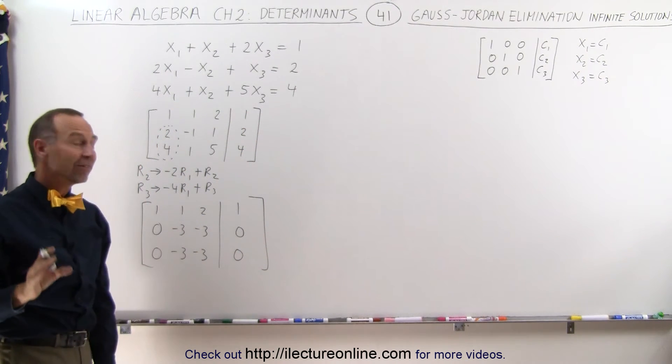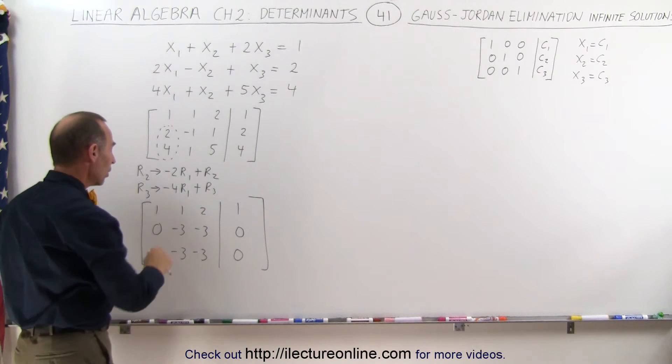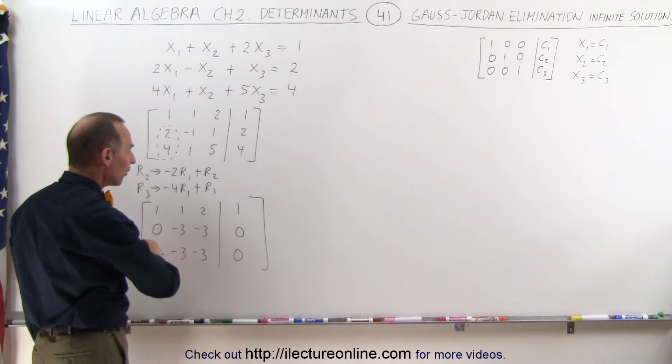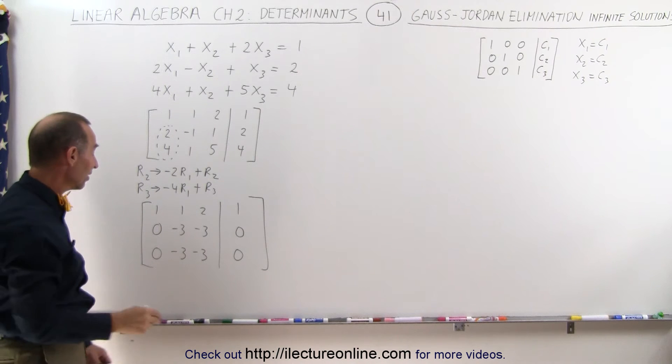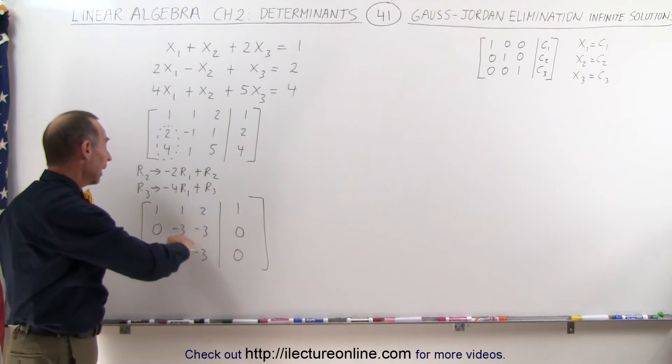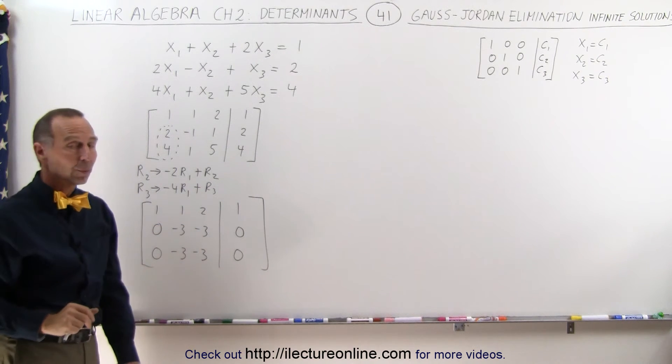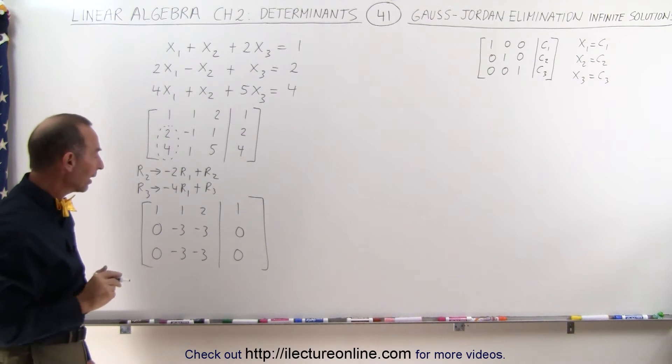Here we can right away see that we have a problem. Notice that two rows are identical, which means that we can make 0s out of one and leave the other identical row there, but let me show you how that's derived.